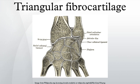The primary functions of the TFCC are: to cover the ulna head by extending the articular surface of the distal radius, load transmission across the ulnocarpal joint and partial load absorption, and allowing forearm rotation by giving a strong but flexible connection between the distal radius and ulna. It also supports the ulnar portion of the carpus.